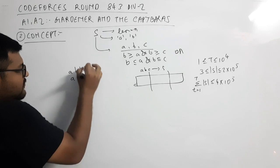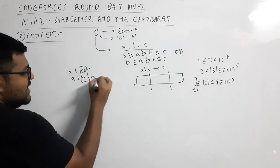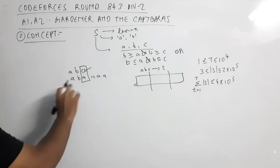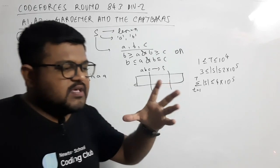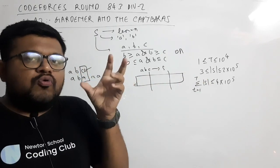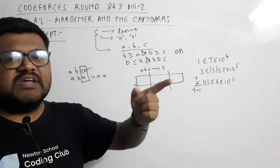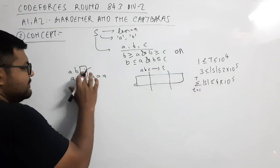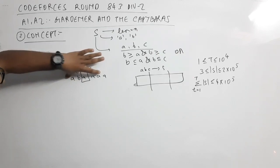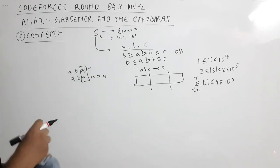For lexicographic comparison: the first non-matching character determines which string is greater. If the full prefix of both strings is the same, then the one with the longer length is lexicographically greater — since the shorter string is a prefix of the longer one. For example, if one string is 'ABA' and the other is 'AB', the longer one is lexicographically greater and appears later in the dictionary.